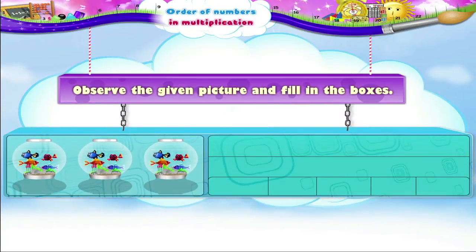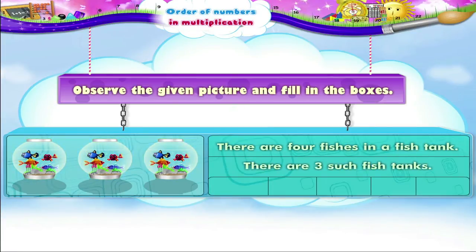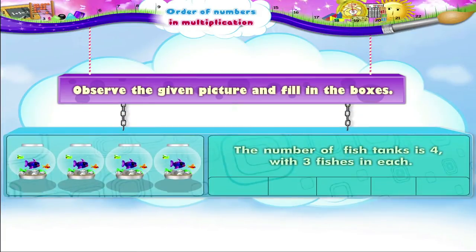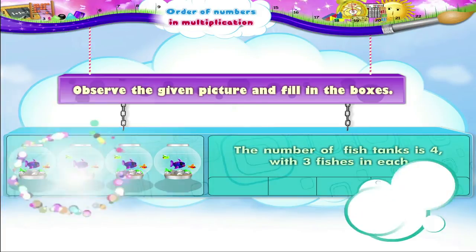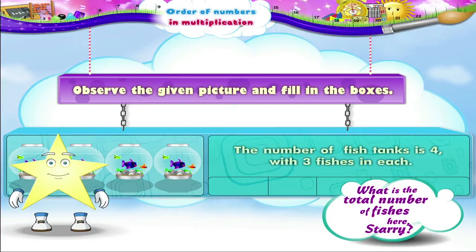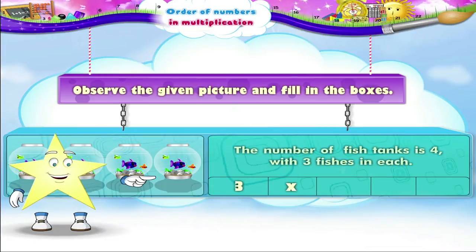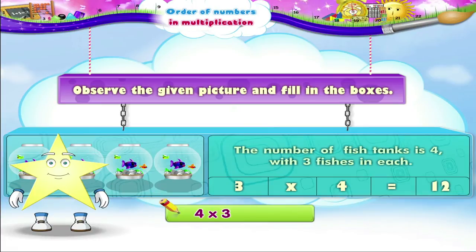In the next picture, there are four fishes in a fish tank. There are three such fish tanks. So we get four into three equals twelve. The number of fish tanks is four with three fishes in each. Three into four is equal to twelve. So four multiplied by three is equal to three multiplied by four.